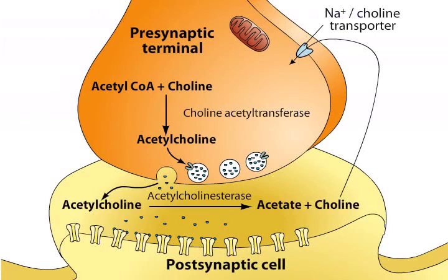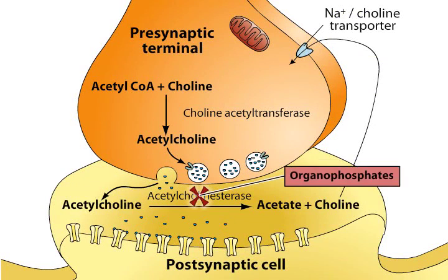Certain organophosphate insecticides, such as diphenyl trichloroethane (DDT), and the nerve gas sarin, inhibit the enzyme acetylcholinesterase, causing ACH to accumulate at the synapse. This buildup of acetylcholine depolarizes the postsynaptic cell and renders it refractory to subsequent acetylcholine release, causing, among other effects, neuromuscular paralysis.